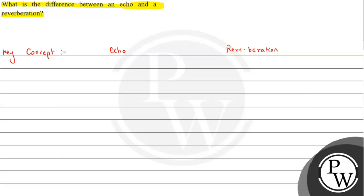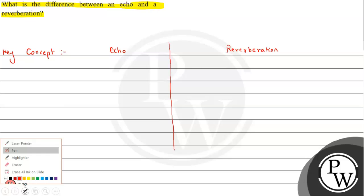So here we have some important points we will point out. The first point is the definition of echo. Echo is basically the sound